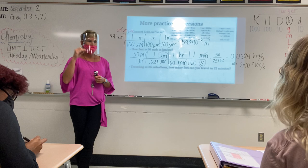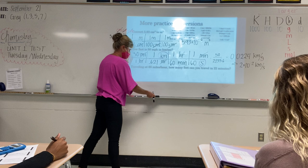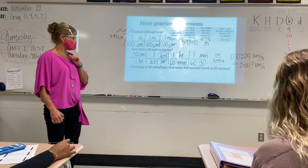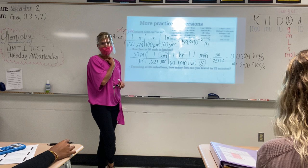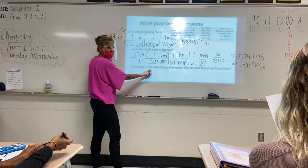Any questions on that one? So anytime you say 'per' or 'in,' make sure you put that second unit on the bottom. Let's do one more together and then I'm going to let you do three on your own to practice. I'm traveling at 65 miles per hour — how many feet can you travel in 22 minutes? I'm looking for one final dimension: how many feet? That's what I'm trying to find. Let's set this up and make sure we set it up correctly.